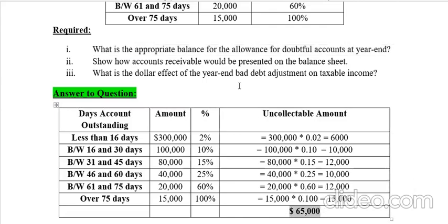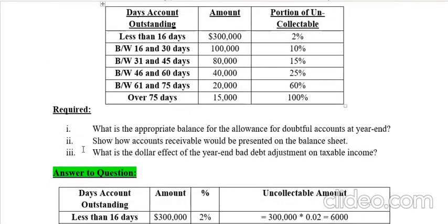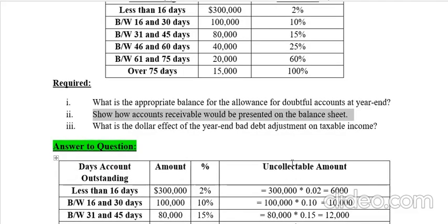Now that we know the allowance for doubtful accounts will be $65,000, and we know from the question that accounts receivable is $555,000, let's move to the second part. Part two asks: how will accounts receivable be presented in the balance sheet?